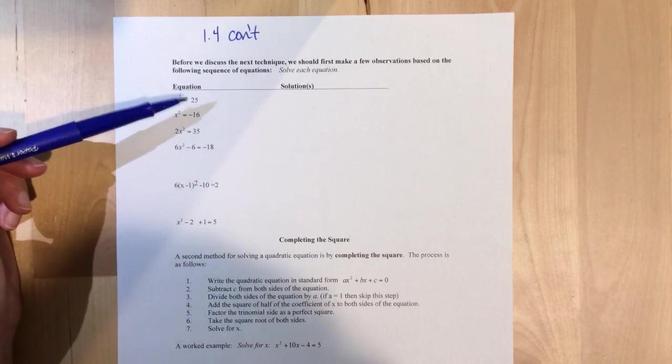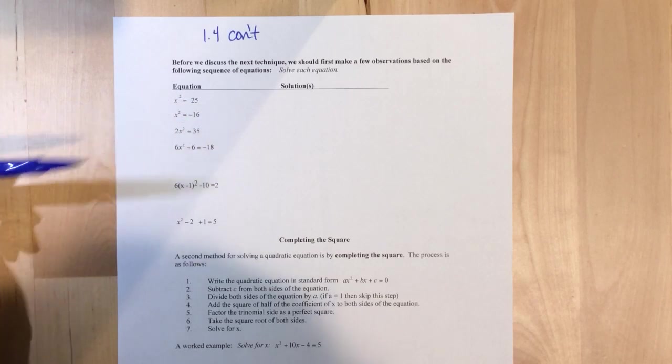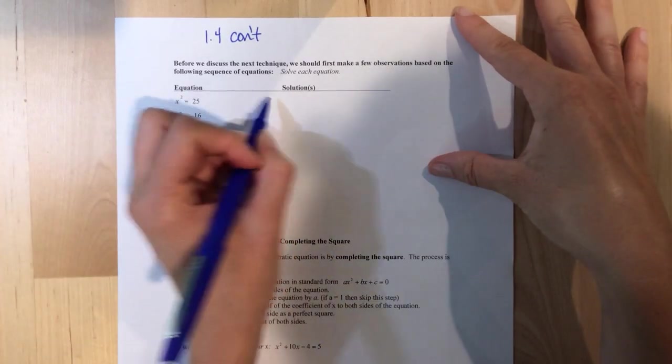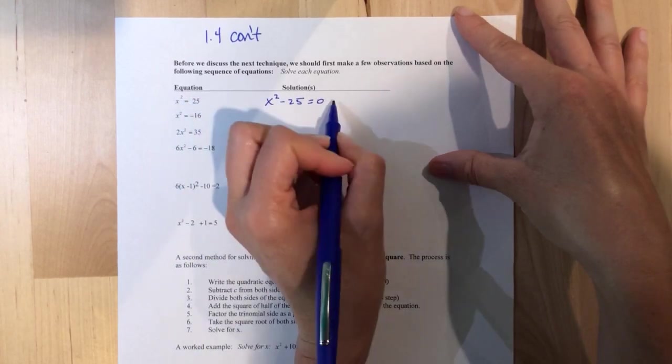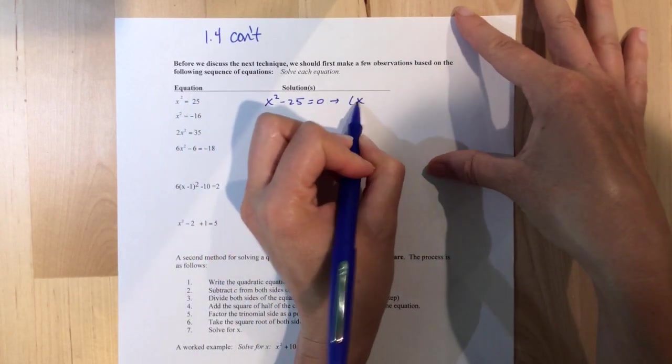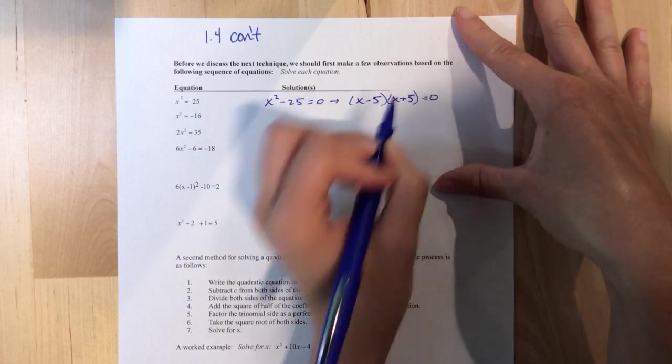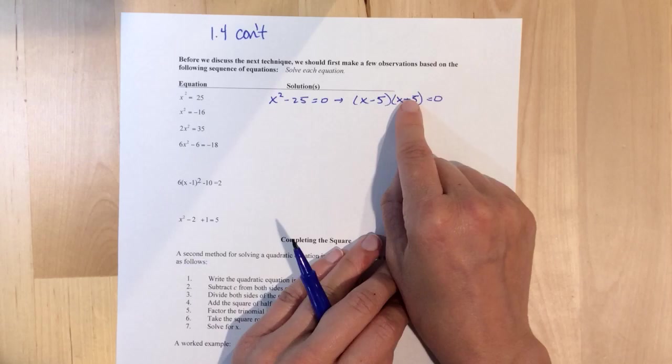Like, who cares, right? So if I've got something like x squared equals 25, well then I can subtract the 25 over and say x squared minus 25 equals 0. Factor this is a difference of squares. And then using the AC method, x equals 5 and negative 5.